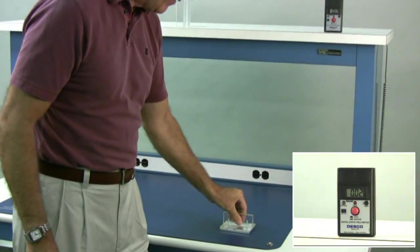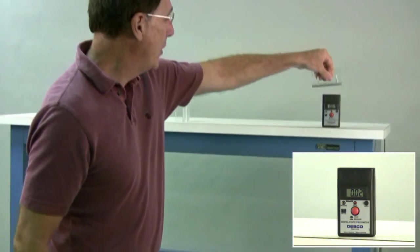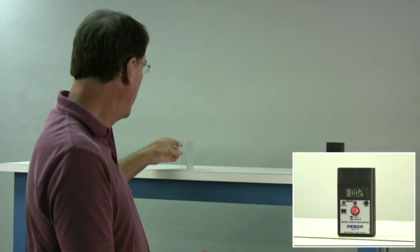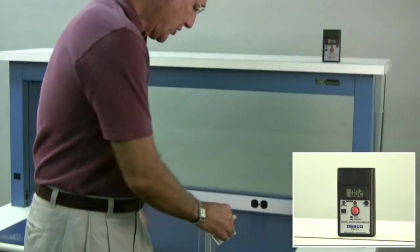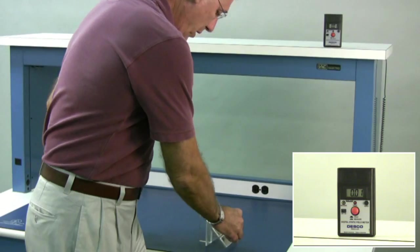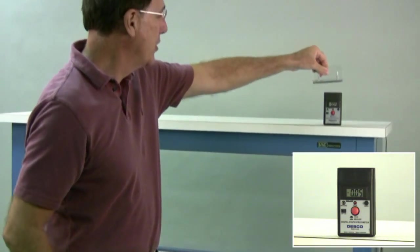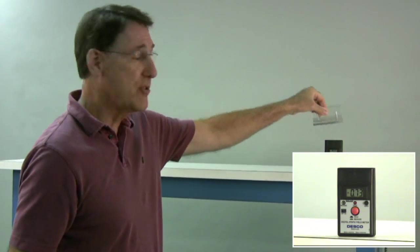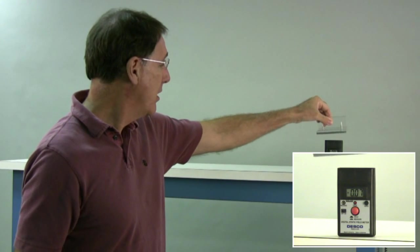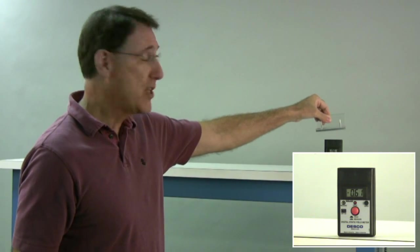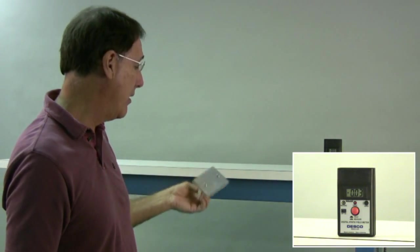So let's try this again. We've got the conductor, we can remove a charge, but if we do it in the presence of a charge, boom, there we got 600, 700 volts, 600 volts that are on it.